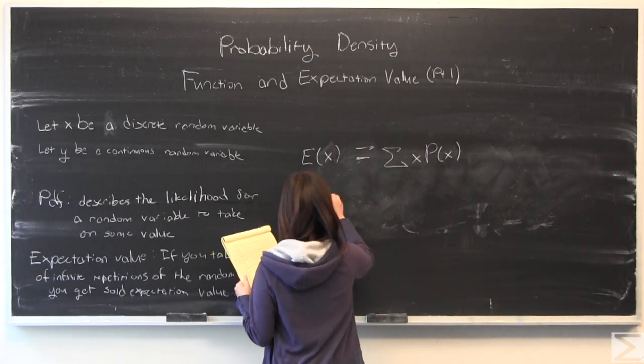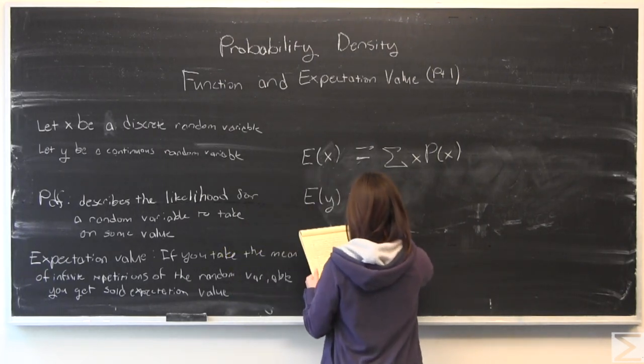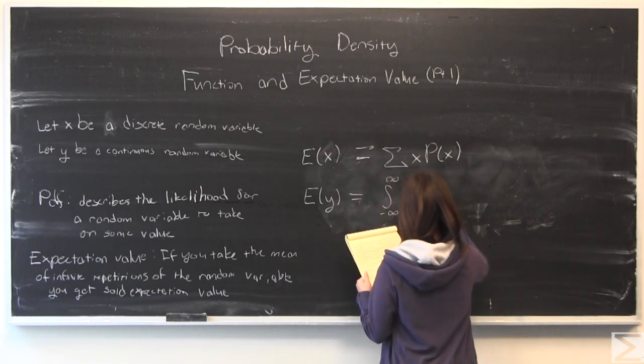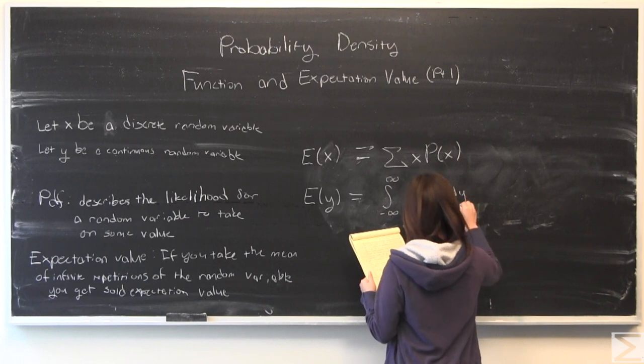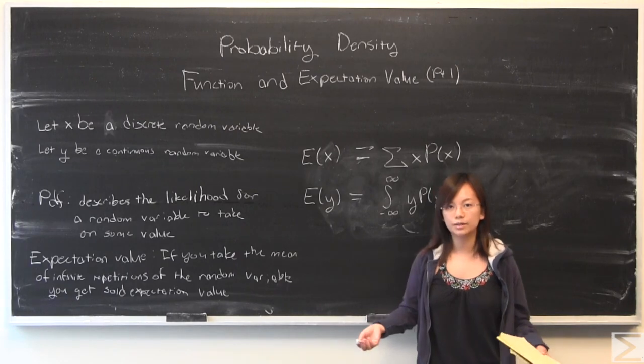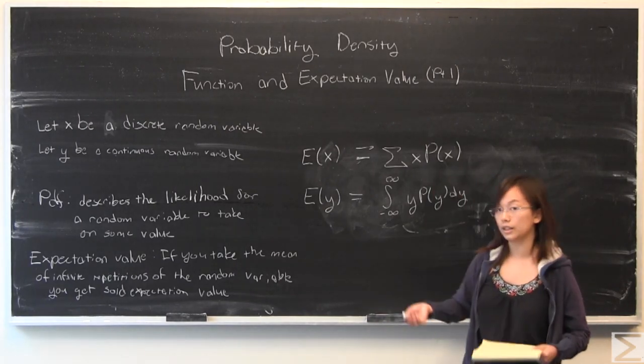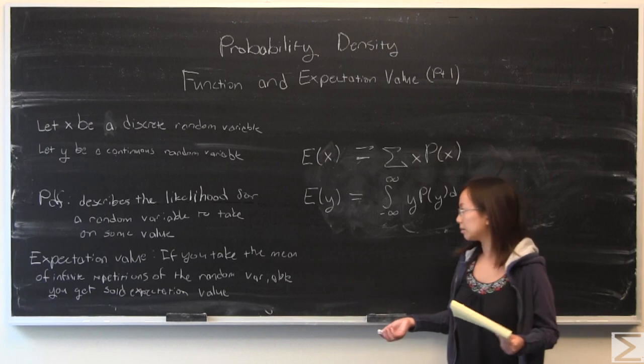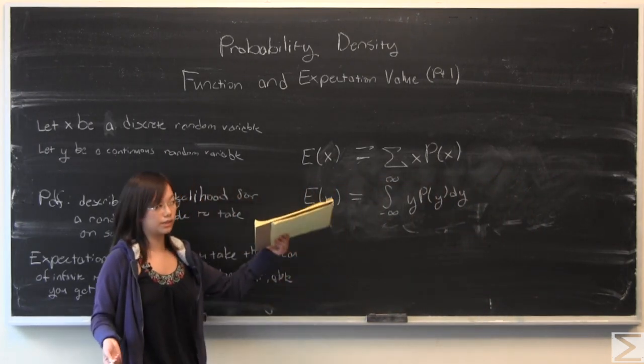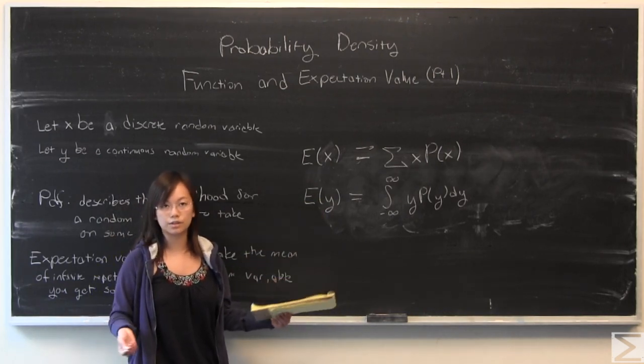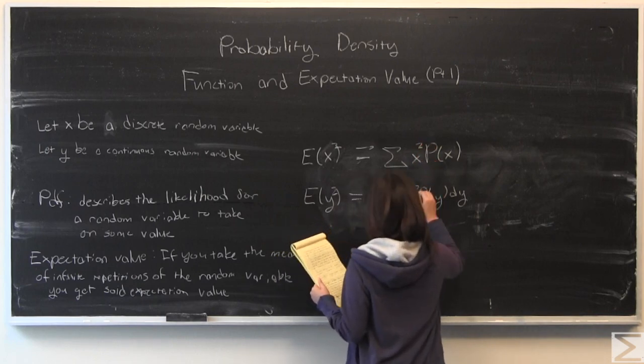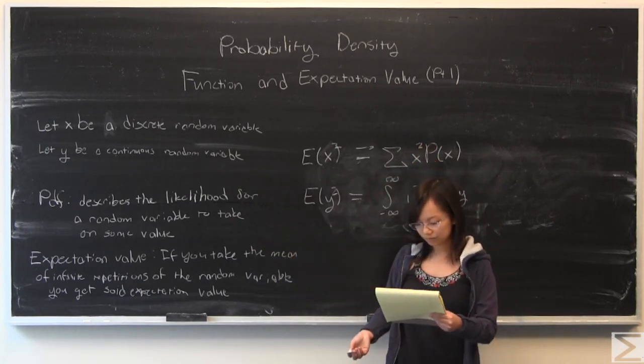For the continuous case, it's very similar but with the integral. So both of these can be used to find some kind of expectation value for some given random variable, and that is a very powerful tool. It's very useful and very applicable in the real world. You can find the expectation value of x, and you can also find the expectation value of x squared, as well as y squared. It's the same thing, you just would square these as well.